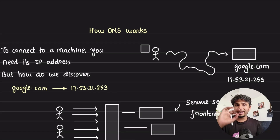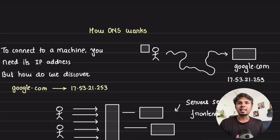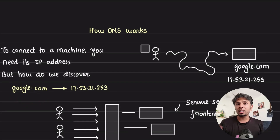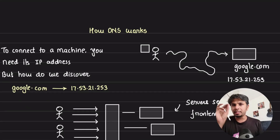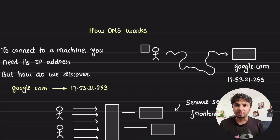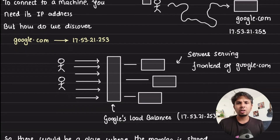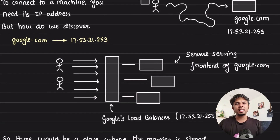To connect to any machine on the internet we need its IP address. Even when we type www.google.com in our browser, what our browser needs is the IP address to establish the TCP connection. This entire process is the DNS resolution process.